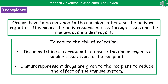The first advance is organ transplants. The level of complexity comes in the fact that we have to match the organ to the recipient, otherwise the body will actually reject it. That means the body recognizes it as foreign tissue and the immune system destroys the replacement organ.